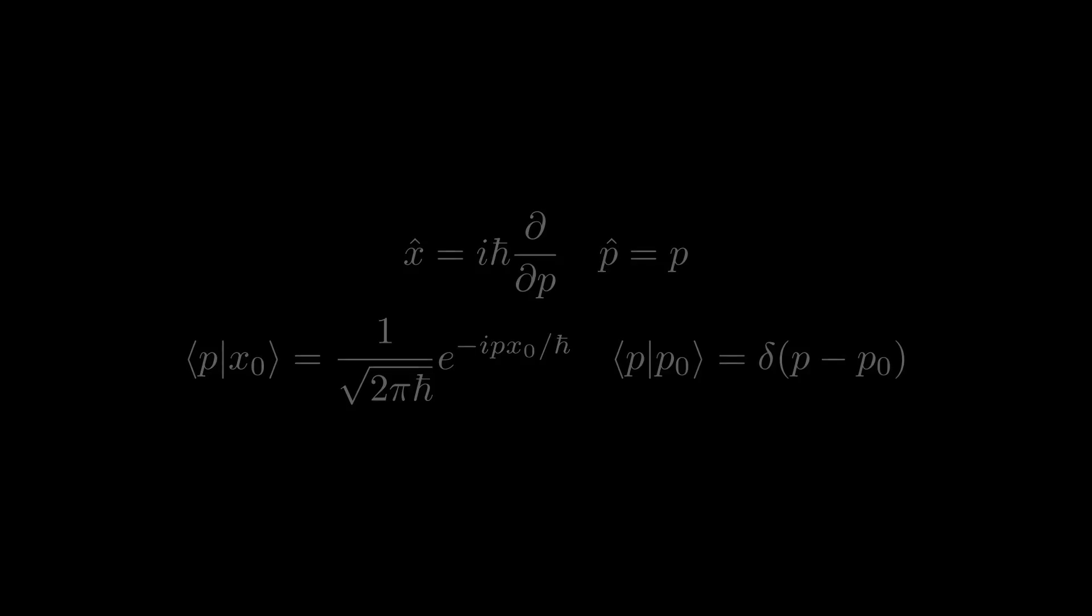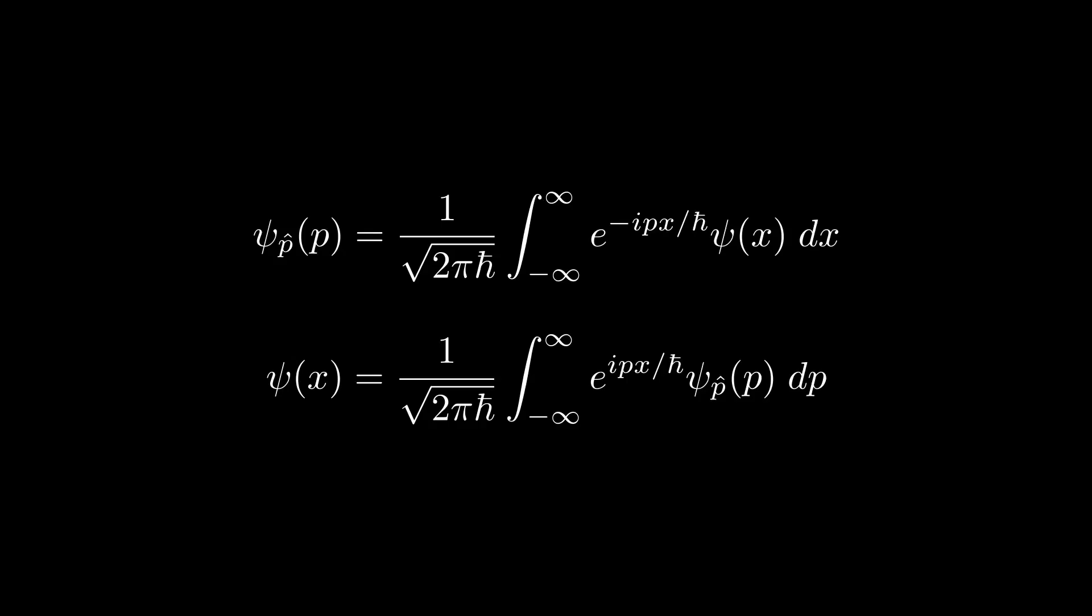Consequently, to transform momentum wave function back into position space, all we need to do is apply the same transform as before, but flip the sign of the complex exponent, effectively performing the inverse Fourier transform.